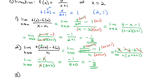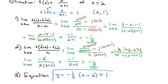Same answer both times — so the equation of the tangent line is y = −(1/3)(x − 2) + 1. The equation of the tangent line to 3/(x+1) at x = 2 is y = −(1/3)(x − 2) + 1.